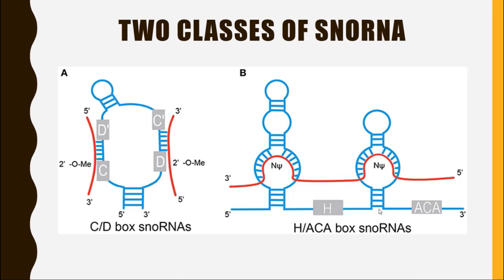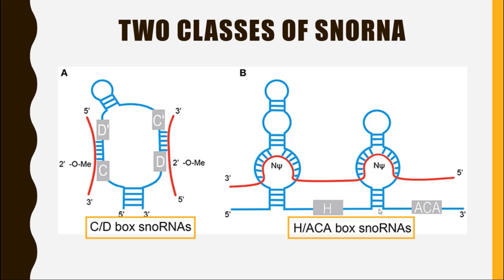Now we have two different types of snoRNA. One type is called C/D box snoRNA and the other type is called H/ACA box snoRNA.